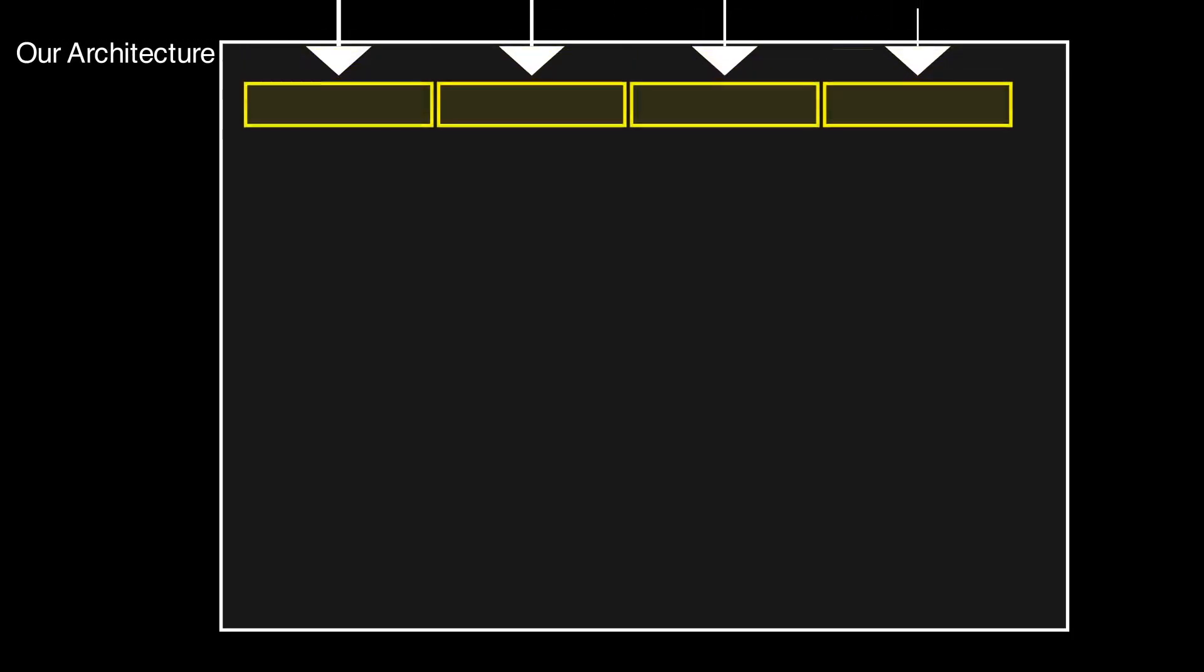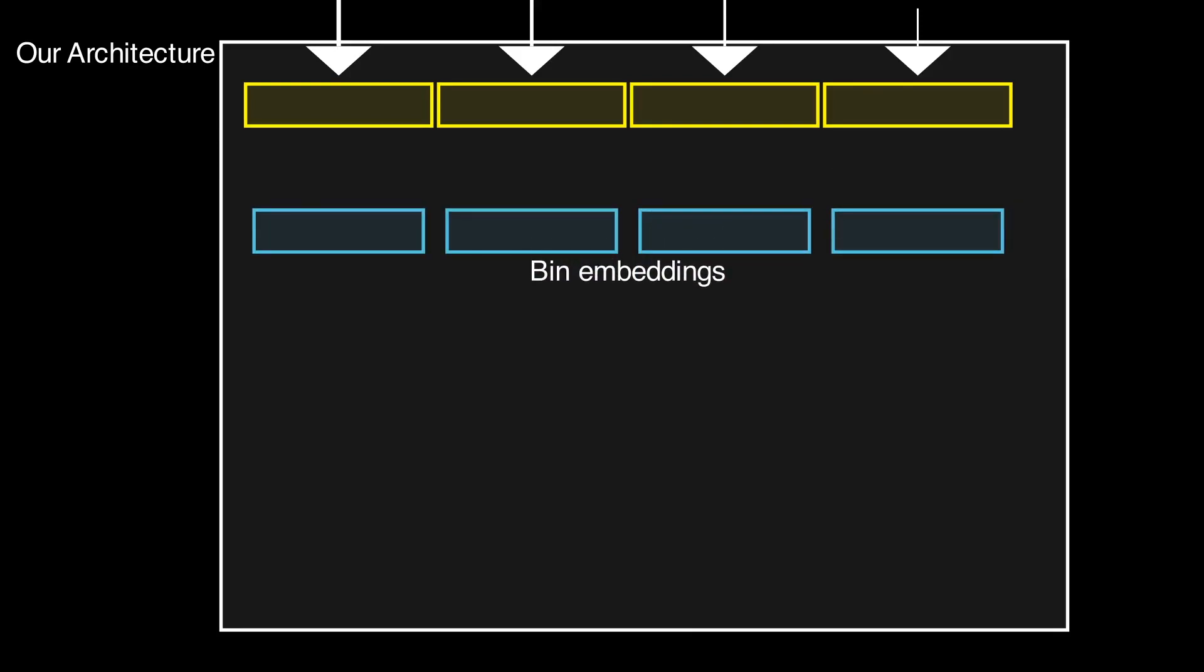First, features at each pixel are projected to a common space that we name as bin embedding space. Then the bin embeddings at the bottleneck are used to predict the seed bin centers using an MLP.